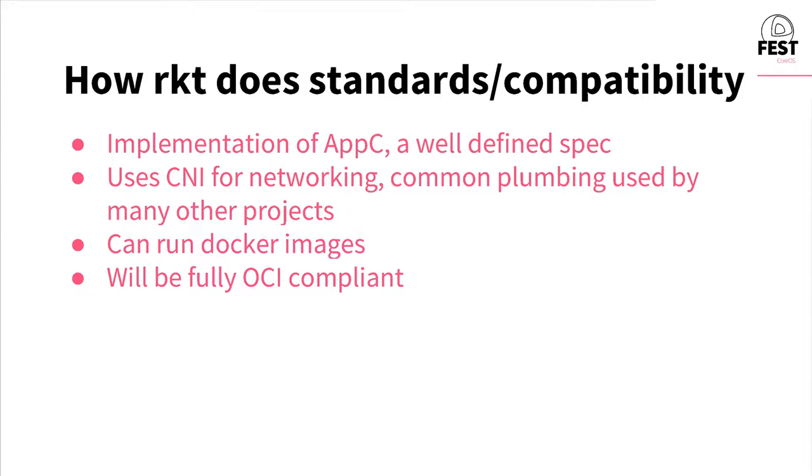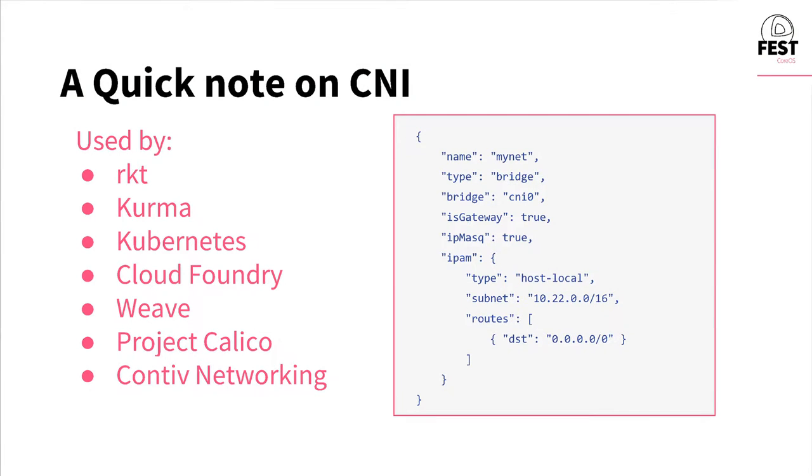For standards and compatibility, Rocket is an implementation of AppC, which is a well-defined container runtime specification. If you want to know how Rocket performs image discovery or what environment variables are set inside the container, you can just read the specification instead of digging through source code. Rocket also uses CNI — the Container Networking Interface — for its networking, which is common plumbing used by many other projects including Rocket, Kurma, Kubernetes, Cloud Foundry, and Weave, providing interoperability across the ecosystem. Rocket can also run Docker images, so you're not tied to AppC container images. Rocket will also be fully OCI compliant in the future.